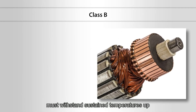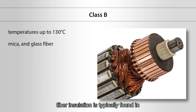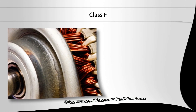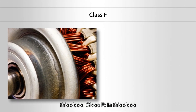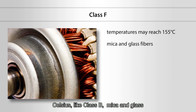Class B insulation: in this class, insulation must withstand sustained temperatures up to 130 degrees Celsius. Mica and glass fiber insulation is typically found in this class. Class F insulation: in this class, temperatures may reach 155 degrees Celsius. Like Class B, mica and glass fibers are used as the insulating medium.